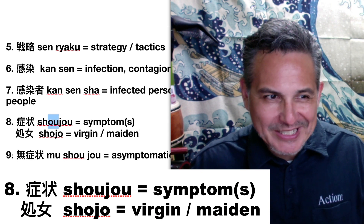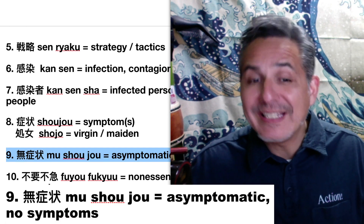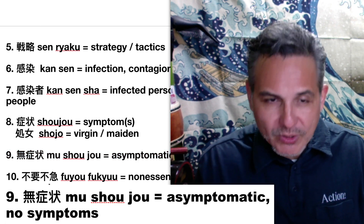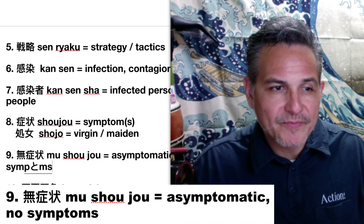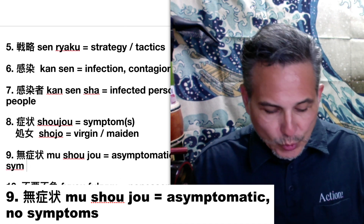Number nine: mu shoujo, or asymptomatic — having no symptoms. Right, no symptoms: mu shoujo.